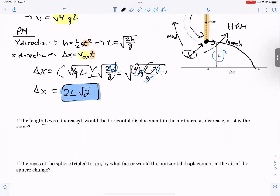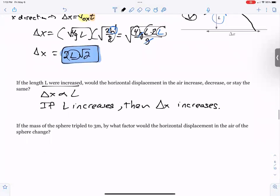Now, if the length were increased, would the horizontal displacement increase, decrease, or stay the same? So, delta X is directly proportional to L. So, if L increases, then your displacement delta X also increases.